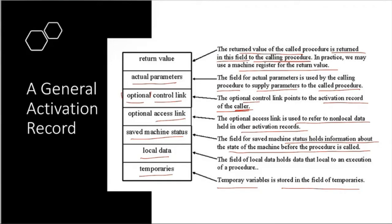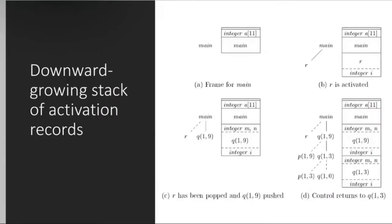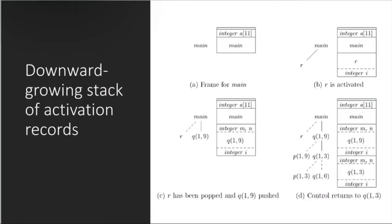Examples of local data are local variables and temporary variables, which are stored in the temporaries field. For better representation, the stack is shown upside down, so the stack grows in the downward direction.